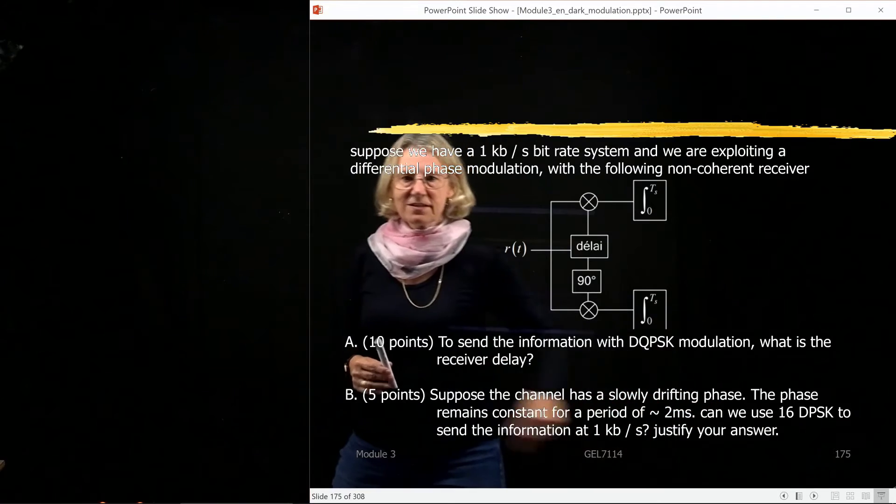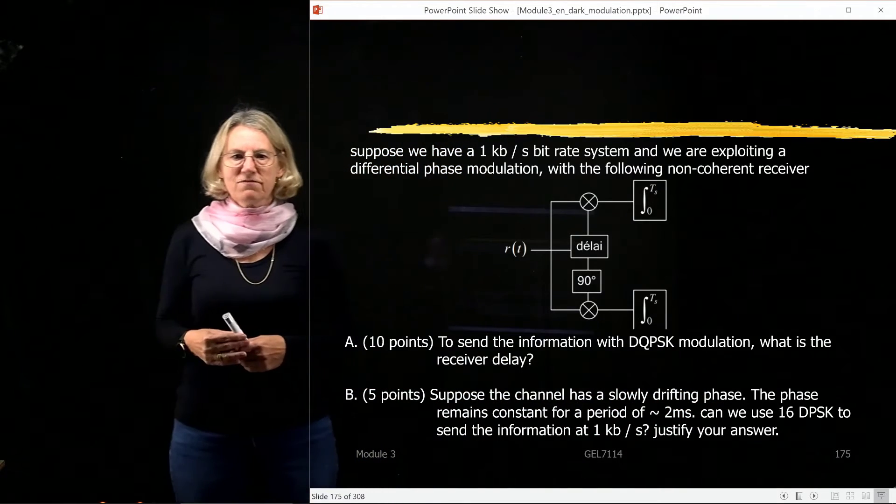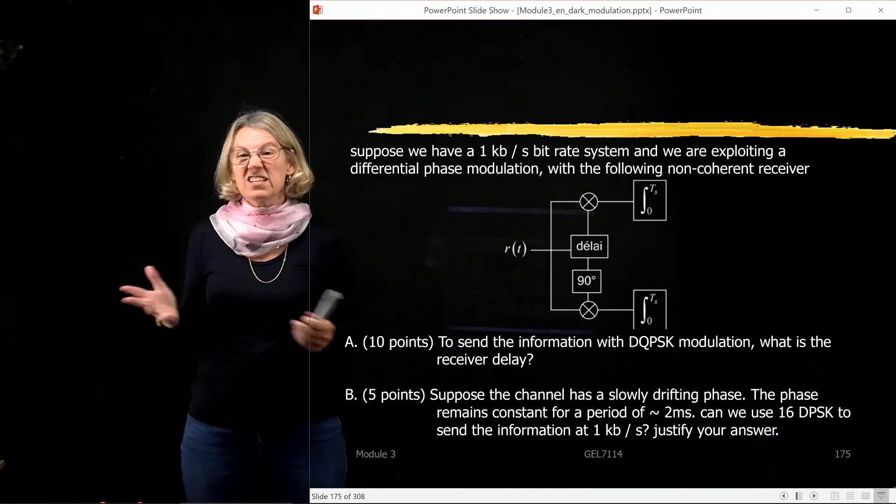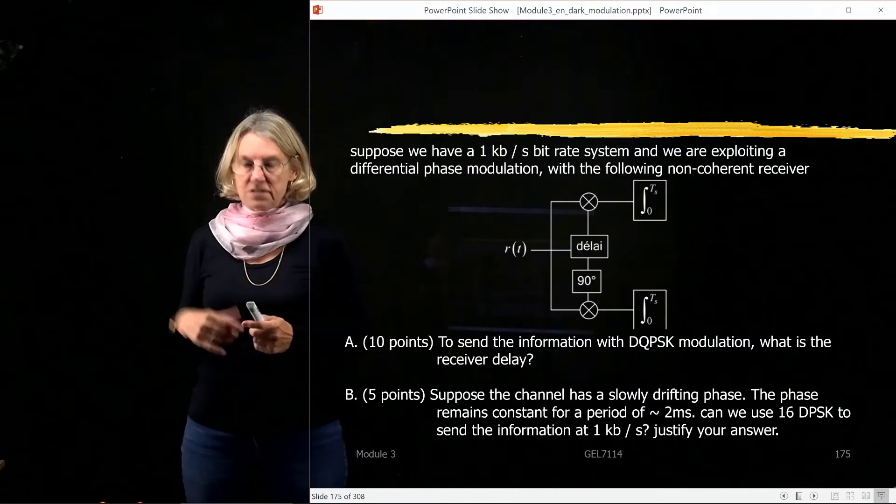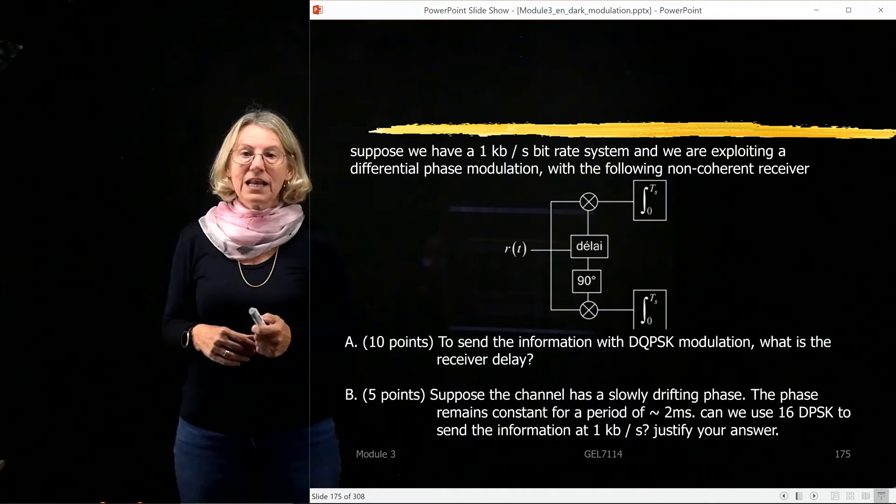Actually I put it up here, 16 DPSK, so you have to look at the symbol rate and see if a change on the order of two milliseconds is consistent with that symbol rate. So this is the kind of question you might have about non-coherent detection.